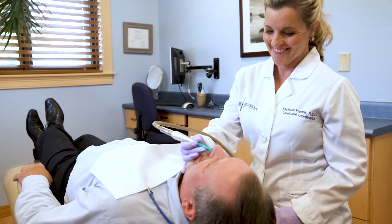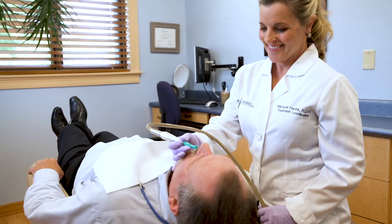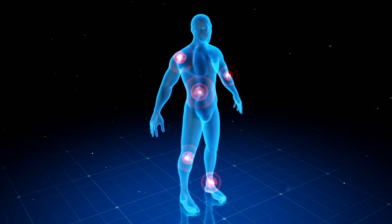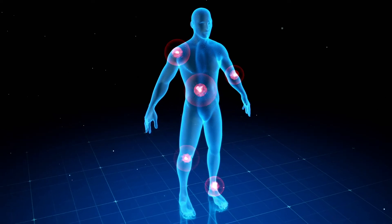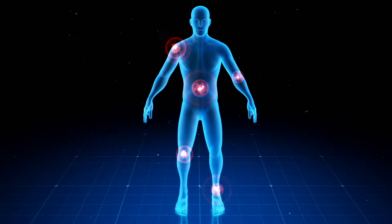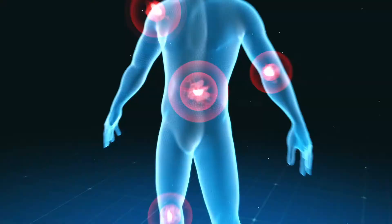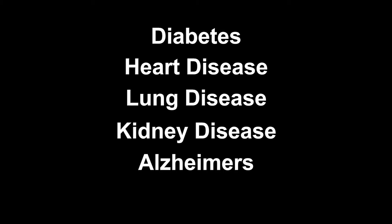So gum disease should not be taken lightly, and it really needs to be detected early on, or we could find that patients come to us and there's nothing we can do. Teeth have too much bone loss, and they end up having to have the teeth removed rather than treated. Periodontal disease is linked to many other systemic diseases — things such as diabetes, heart disease, lung disease, kidney disease, even Alzheimer's disease, and some cancers.